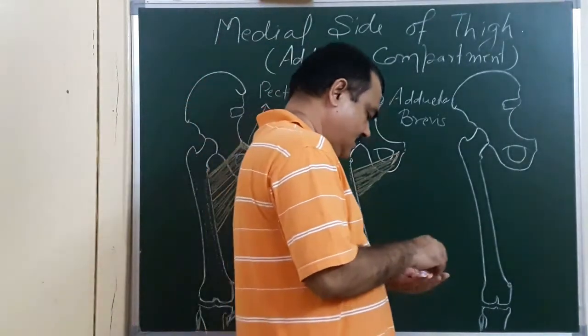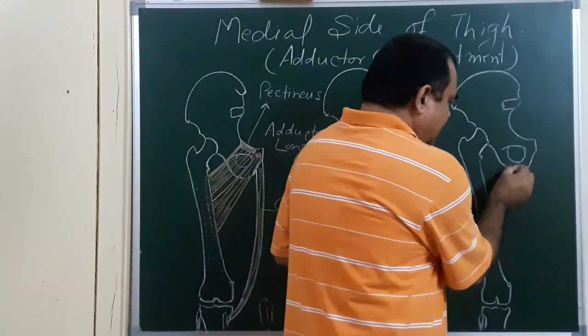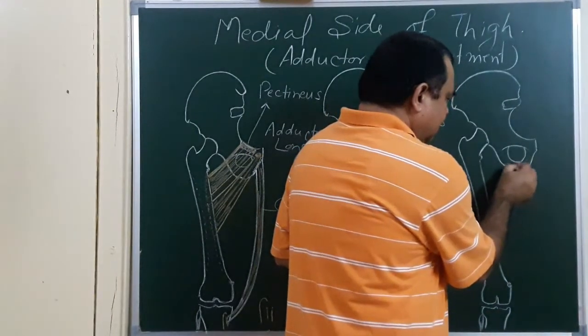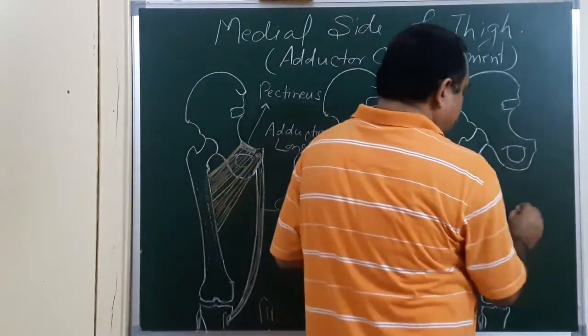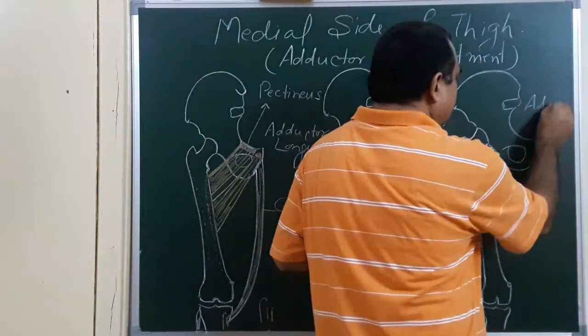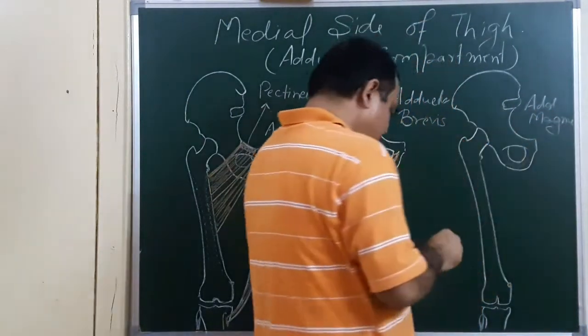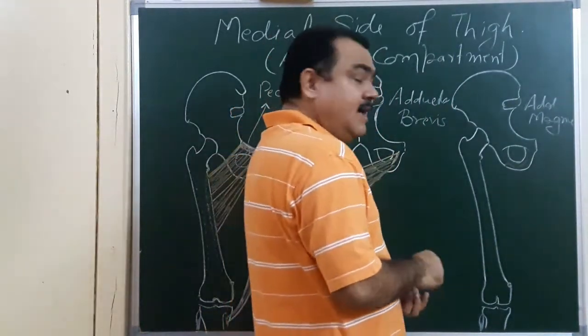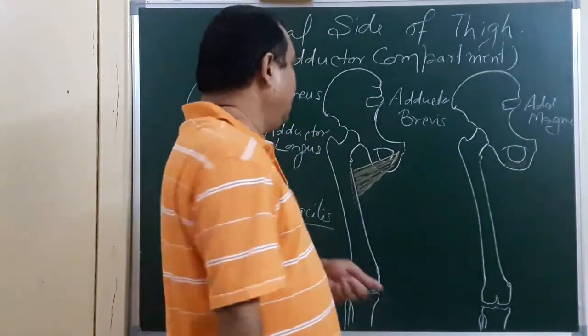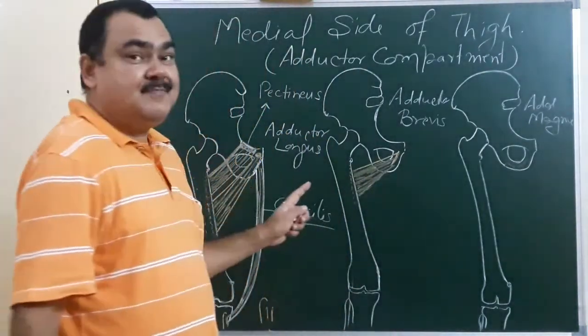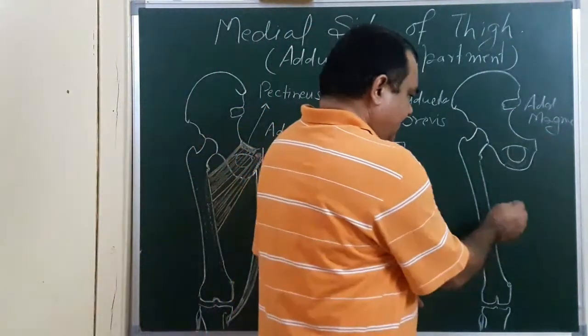Next muscle, that is adductor magnus. This adductor magnus has two parts, adductor part and hamstring part. That part which lies in the posterior compartment. So it has adductor part and hamstring part.